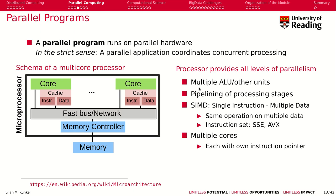Inside one core you find multiple ALU systems and other units that can work concurrently on different instructions. You pipeline the processing stages inside the core, meaning you overlap different follow-up operations. We also have SIMD — Single Instruction Multiple Data — meaning one operation runs on multiple data, like multiplying a vector of four elements by two. Instruction sets like SSE and AVX do that. And you have multiple cores, each acting as their own independent CPU with its own instruction pointer running an independent program.